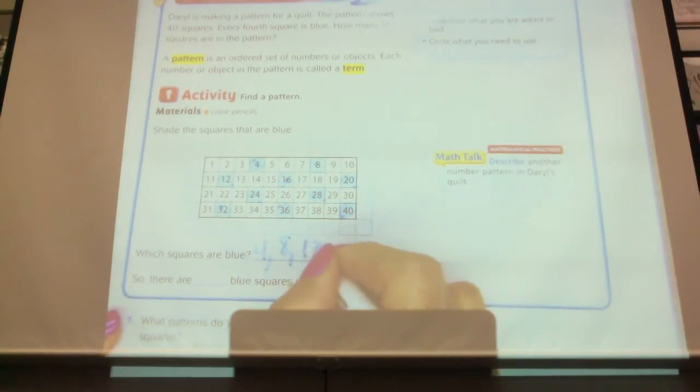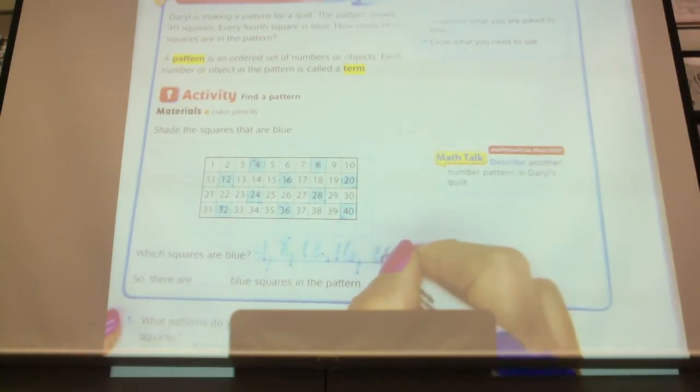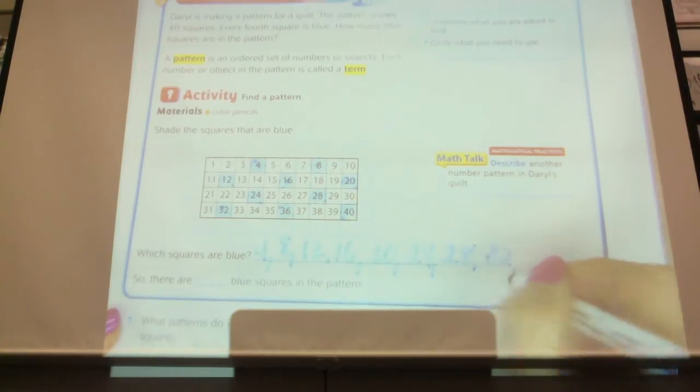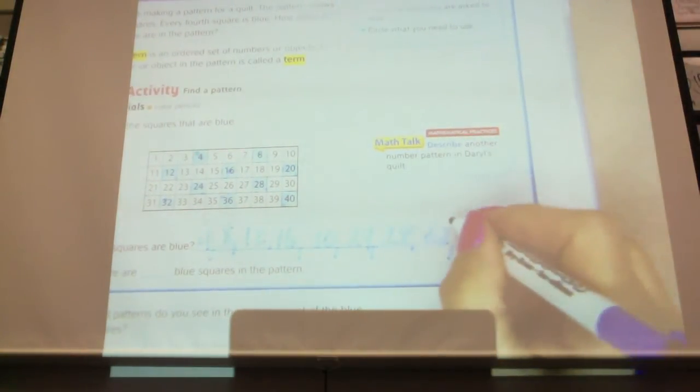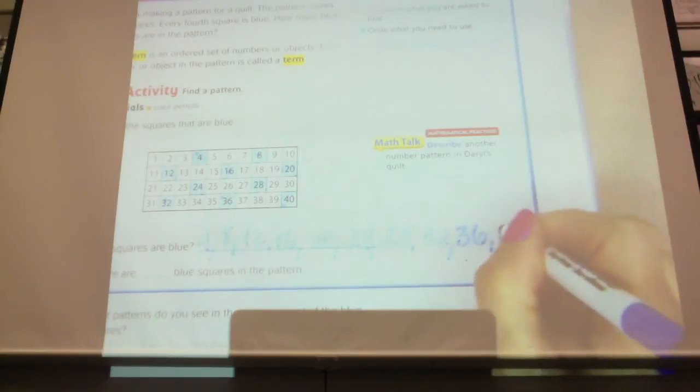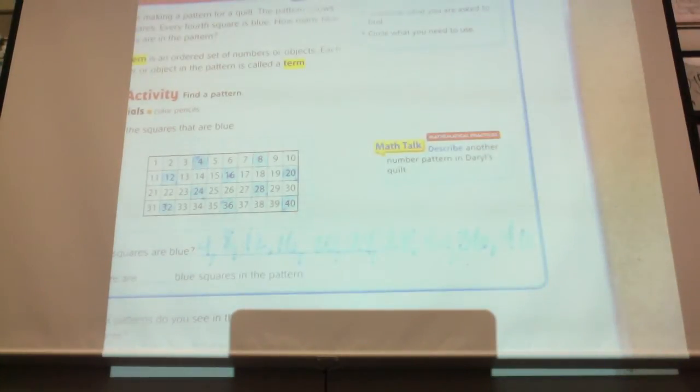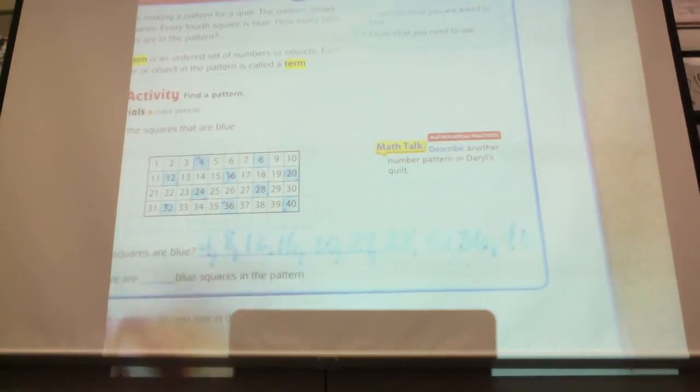So four, eight, twelve, sixteen, twenty, twenty-four, twenty-eight, thirty-two. My pen is very light. It was working. Now it's not, thirty-six and forty. I'm going to switch. Okay. So if I count up all my blue squares or I count up all the numbers I wrote here, we called each of these a term, how many do I have? I want you to take a second and count them all. How many blue squares are there? Ten. Ten.